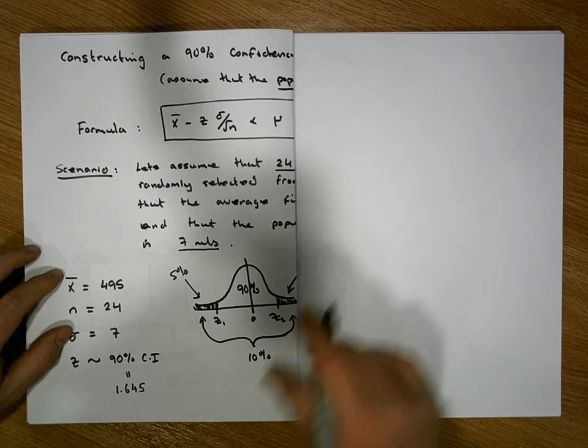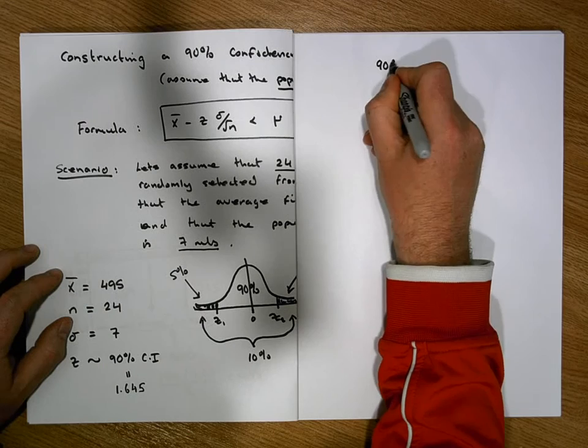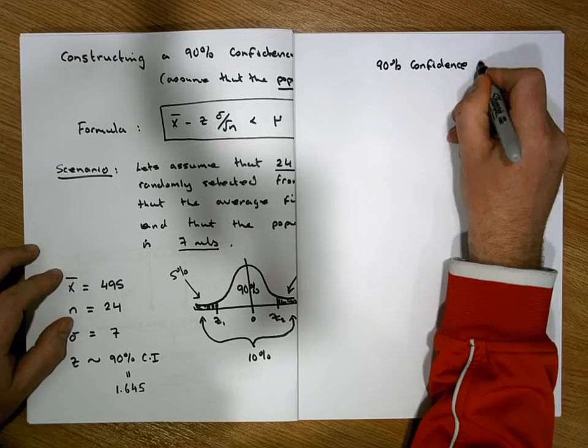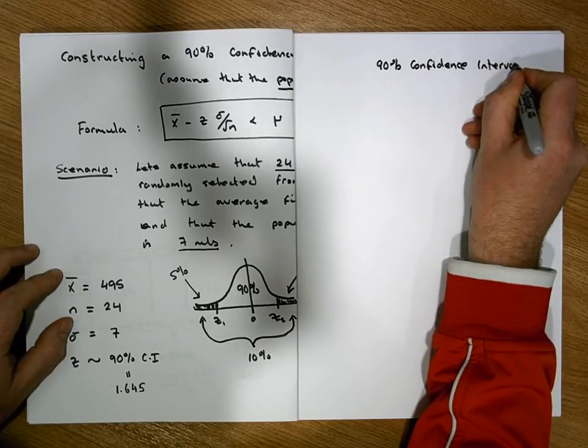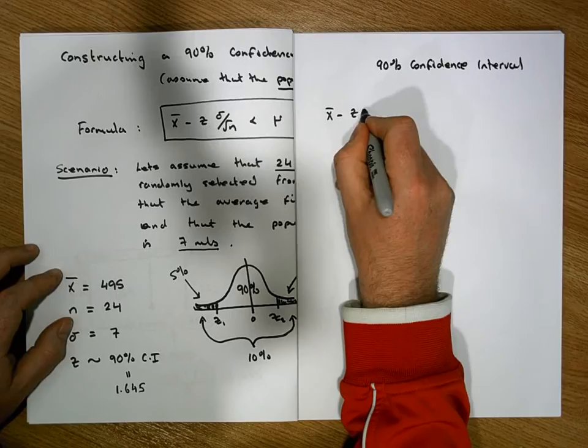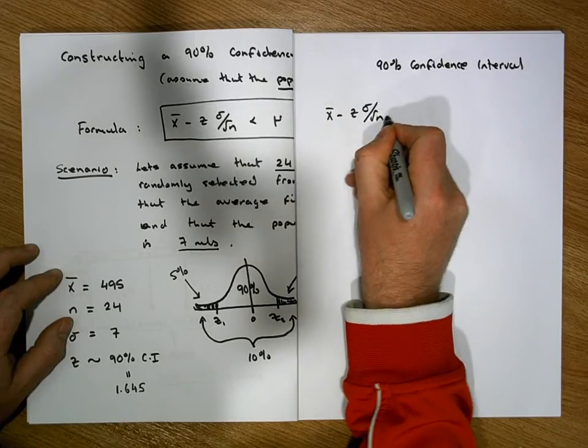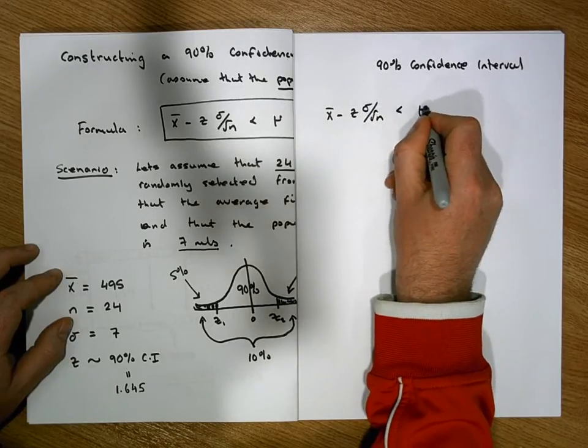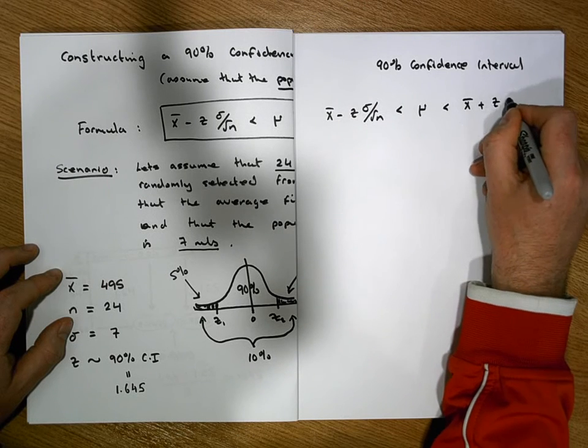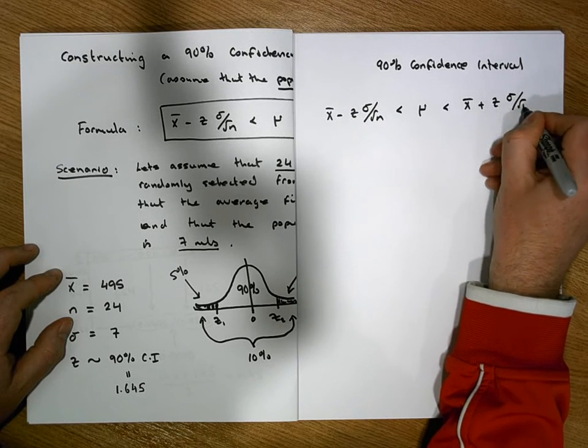So our 90% confidence interval for the true population mean can be calculated by x-bar minus z of sigma over the square root of n must be less than the true population mean, which must be less than x-bar plus z of sigma over the square root of n.